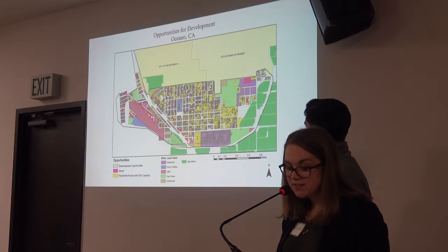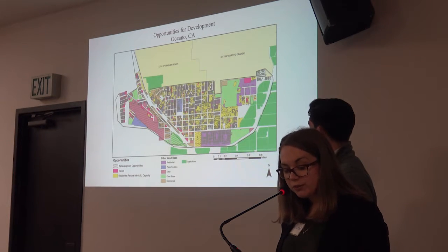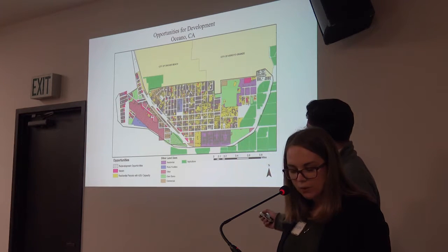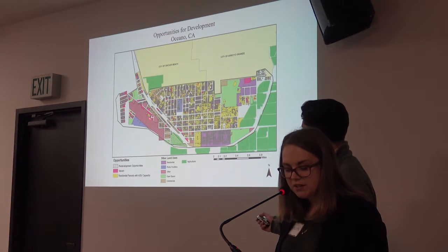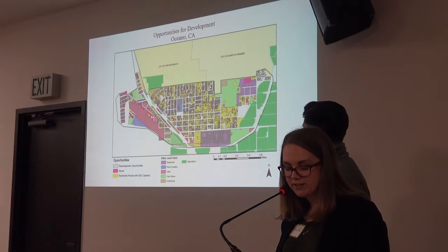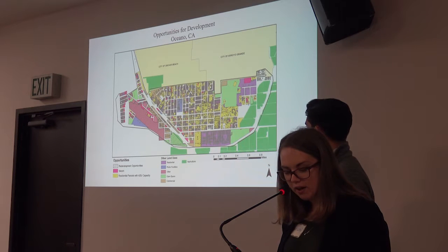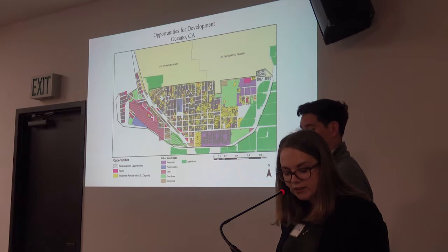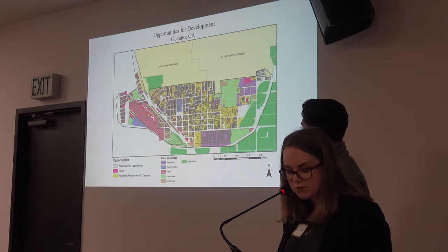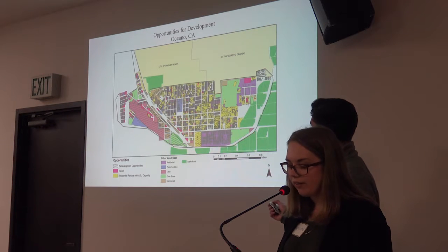Oceano doesn't have a lot of vacant land for growth. Opportunities for redevelopment, indicated by the hash lines, were identified based on community feedback and the analysis performed by the planning team. With limited vacant land and limitations to expansion in mind, we calculated residential parcels with ADU capacity. These are indicated in yellow.